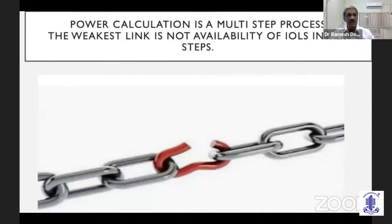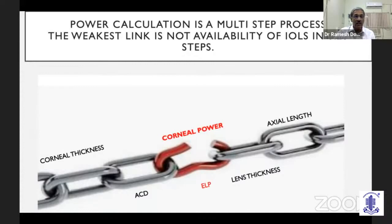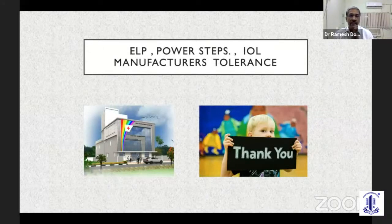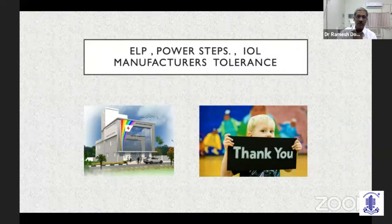As most of us are able to achieve these levels with our regular lenses, the need for a 0.25 step has not really picked up. Power calculation is a multi-step process. The weakest link currently is not measurement of corneal thickness, anterior chamber depth, lens thickness, or axial length — we get very accurate measurements of these. The weakest step is estimating the ELP and measuring the true corneal power in the visual axis rather than on the corneal vertex. These issues need to be addressed before we start using lenses in 0.25 power steps. In brief, I have covered ELP, power steps, and manufacturing tolerances, and I will be happy to take any questions.